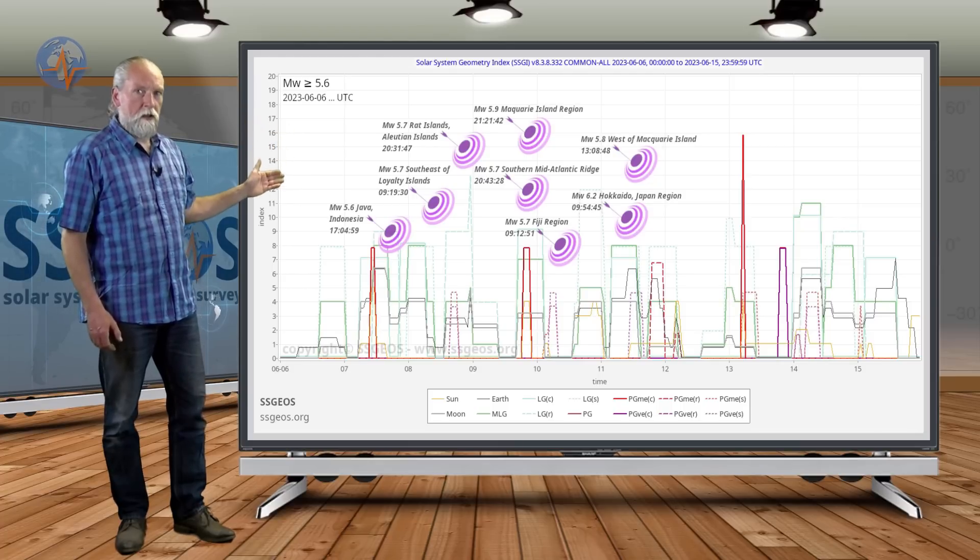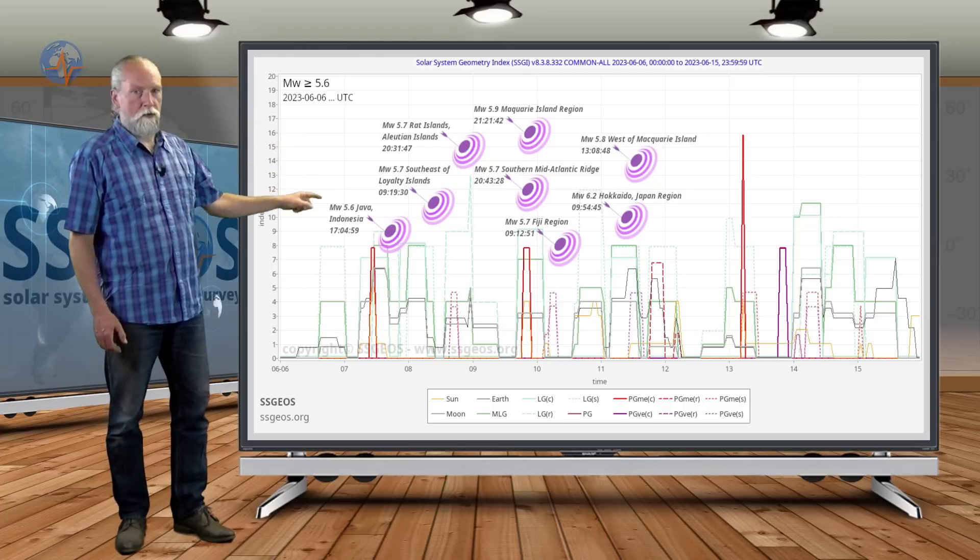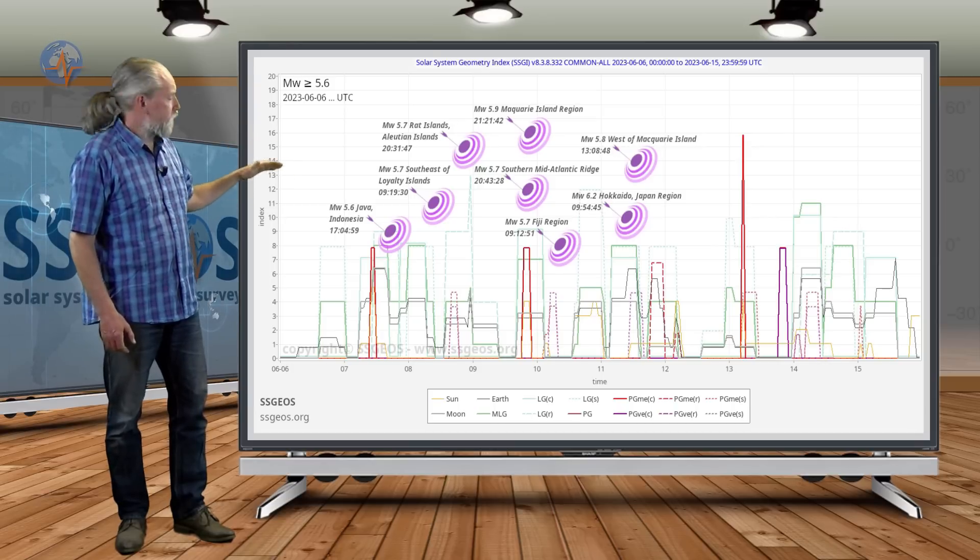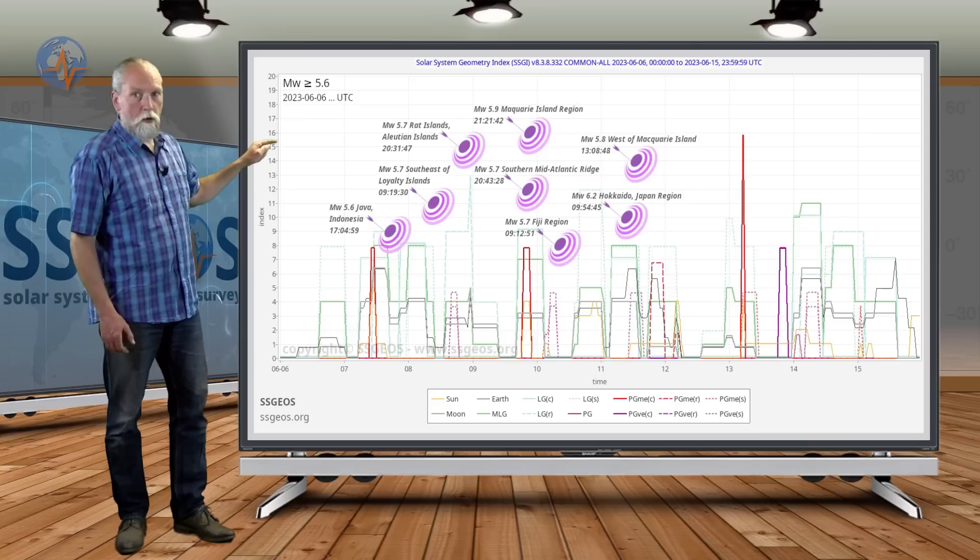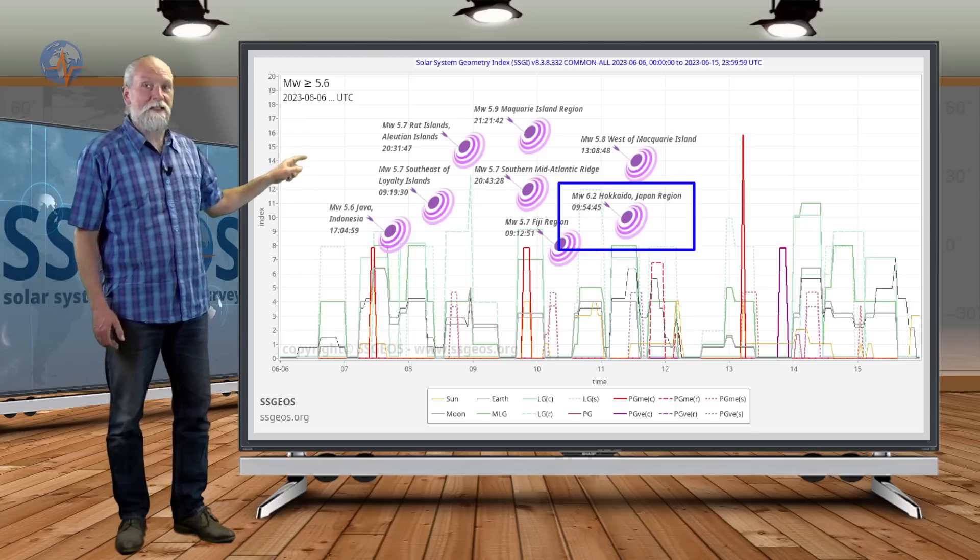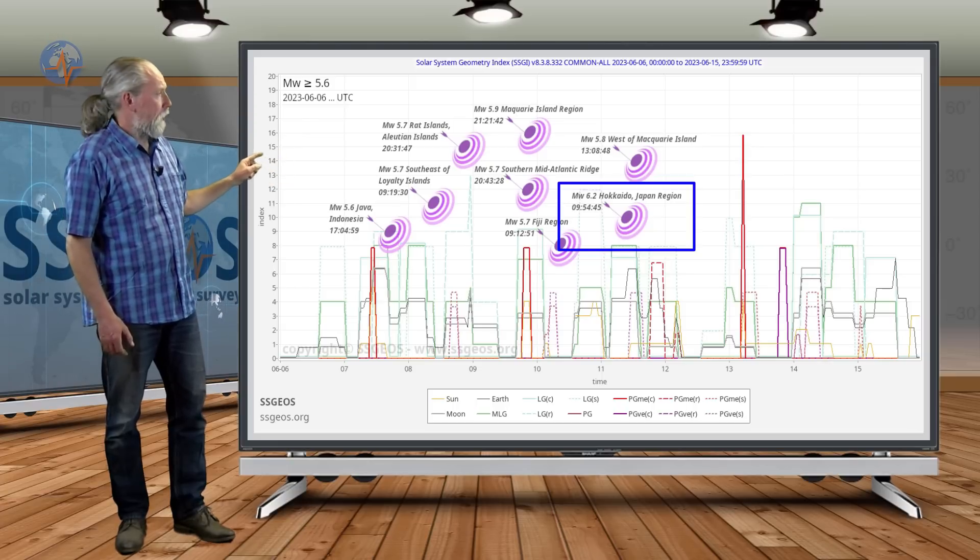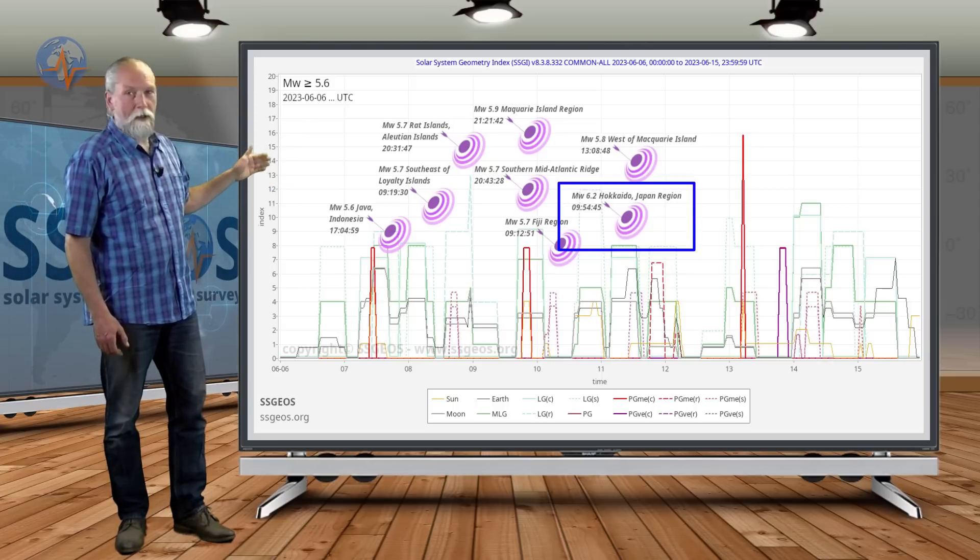Following planetary conjunctions on the 7th and on the 9th, with a threshold of magnitude 5.6 and larger, we see also a magnitude 6.2 earthquake, the first magnitude 6 earthquake since May 31st. This happened yesterday morning in Japan, the Hokkaido-Japan region.